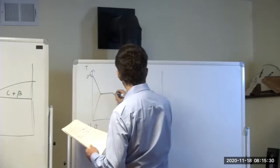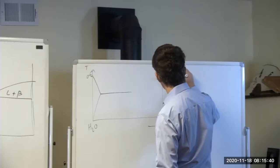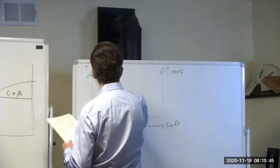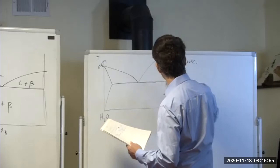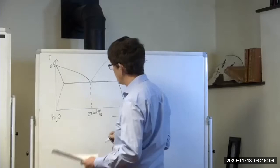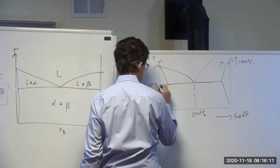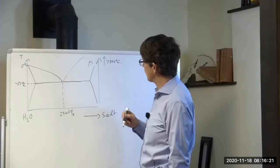The melting point of salt is something like 900°C — totally off the scale. But the system forms a eutectic, and the eutectic is at about 23 weight percent salt at approximately minus 21°C, which is roughly minus 6°F.